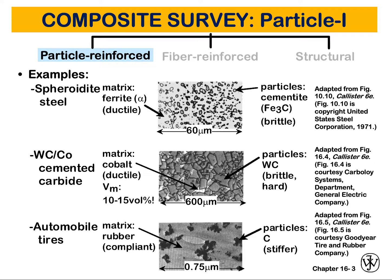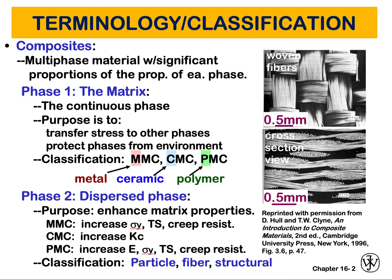If you remember from a previous video, we talked about terminology and some definitions. We defined composites as any multi-phase material that exhibits a significant proportion of the properties of the multiple phases. The three classifications are: particle reinforced, fiber reinforced, and structural reinforced.